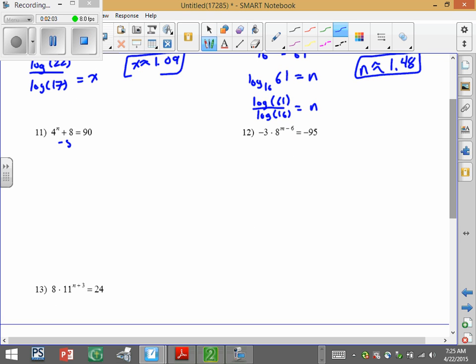Here we have to subtract 8 from both sides. So we end up with 4 to the n equals 82. So log base 4 of 82 equals n. And here we go again, change of base. Log of 82 over log of 4 equals n. So n is approximately 3.18, rounded to two decimal places.